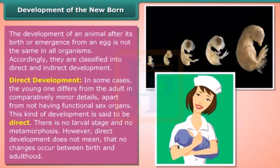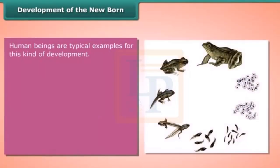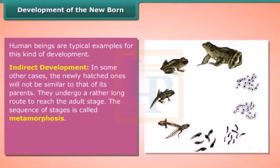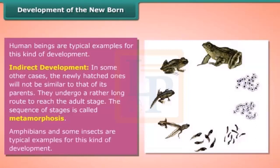However, direct development does not mean that no changes occur between birth and adulthood. Human beings are typical examples of this kind of development. In indirect development, the newly hatched ones will not be similar to their parents. They undergo a rather long route to reach the adult stage, and the sequence of stages is called metamorphosis. Amphibians and some insects are typical examples of this kind of development.